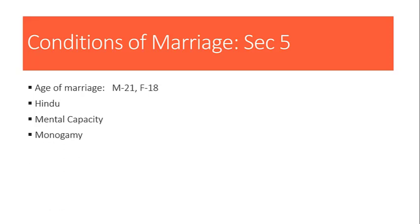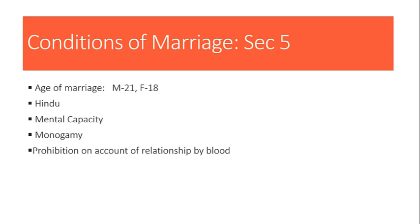Fourth condition is monogamy. Hindu Marriage Act monogamy ko support karta hai — yaani ki marriage ke time pe dono parties mein se kisi bhi ek ka spouse at the time of marriage living nahi hona chahiye, ya phir woh totally divorced hone chahiye. Ek wife ke hote hue ya ek husband ke hote hue doosari shadi nahi kar sakti — this is called polygamy, and it is a type of crime in Hindu law. Fifth condition is prohibition on account of relationship by blood — sapinda relationship and prohibited degree of relationship. These are the 5 conditions which should be fulfilled for a valid marriage.